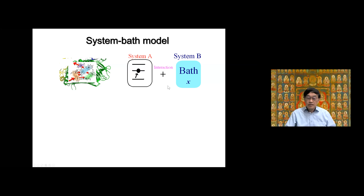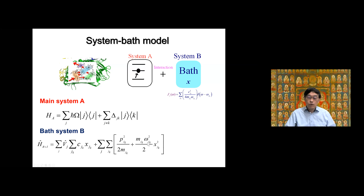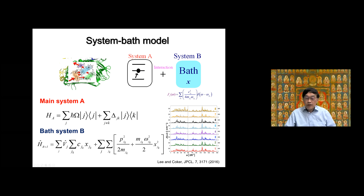There is an interaction, and we separate the system part and the heat bath part. The system part is simplified, expressed in coordinate space. The other degrees of freedom are expressed by the heat bath — an ensemble of harmonic oscillators, denoted by X. The bath is characterized by the spectral distribution function J(ω), which can be obtained from experiment or simulation. For each chromophore, there is a different spectral distribution.